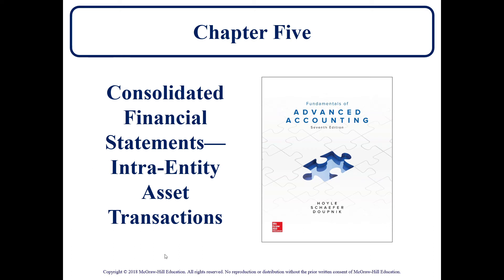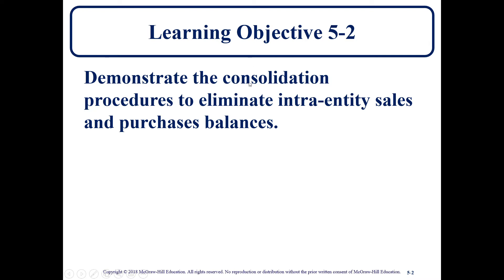Hello everybody, we are moving on to chapter 5. We're looking at consolidated financial statements and intra-entity asset transactions. Our first asset we'll be looking at is the sale of inventory — intra-entity sales between parent and subsidiary companies — and how this is going to be handled when we prepare consolidated financial statements.